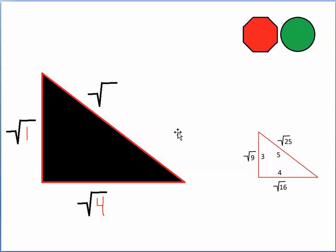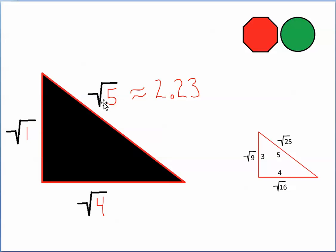Look at this one. The length of this side is the square root of 1, and the length of this side is the square root of 4. So the length of the hypotenuse is the square root of 5 because 1 plus 4 is 5. The length of this side is really 1 and the length of this side is really 2, so the hypotenuse is 2.23. The longest line in a right triangle is always longer than either one of the legs, and 2.23 is longer than 2, so we're in good shape.